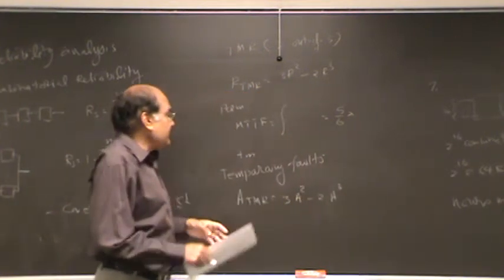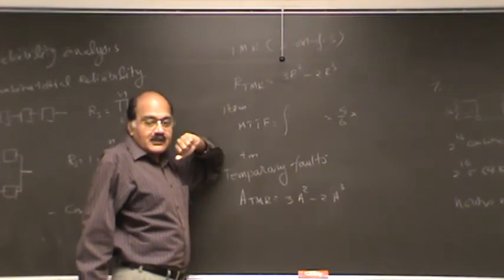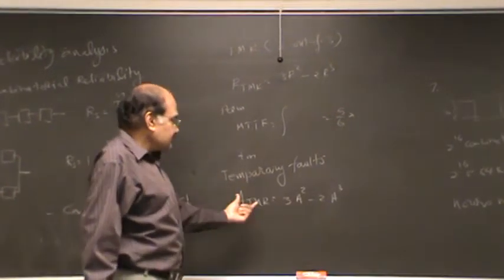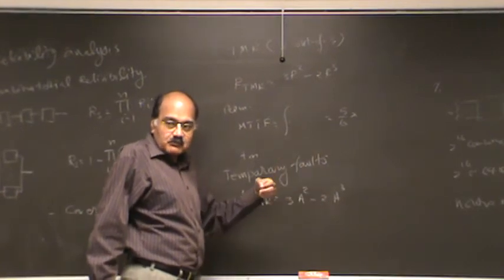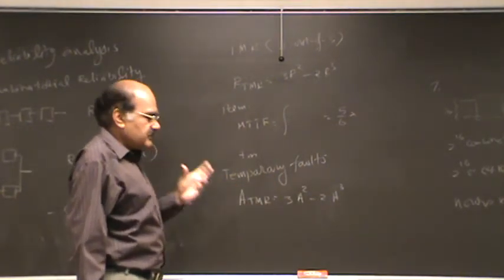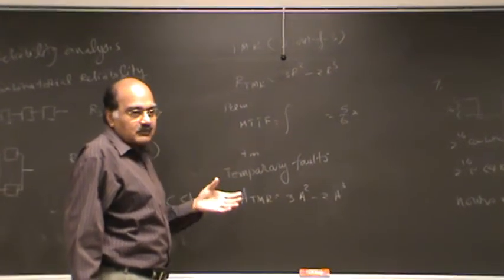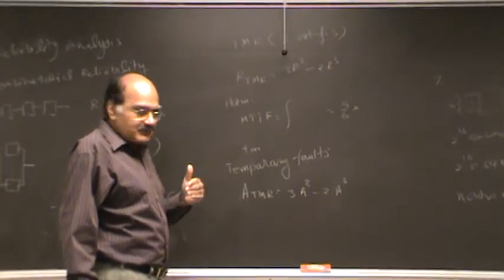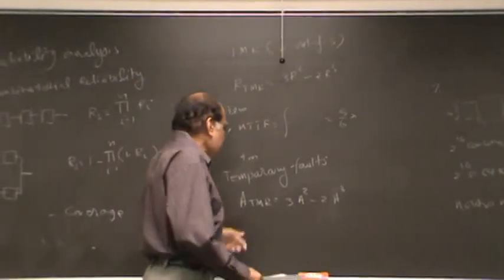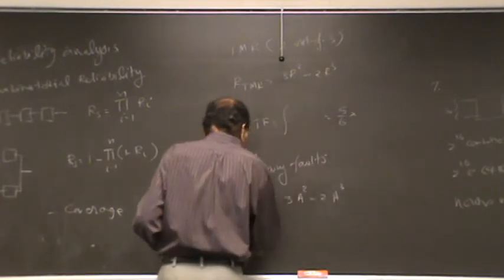You can go over how we came to this, and you will find that exactly the same analysis would apply. Availability of a TMR - remember availability is the probability that the system is available or operating correctly at some instant in time. We are assuming here that you have a steady state availability.